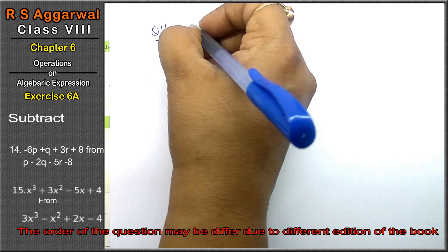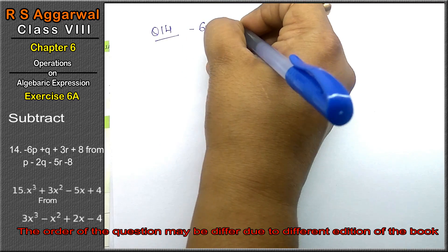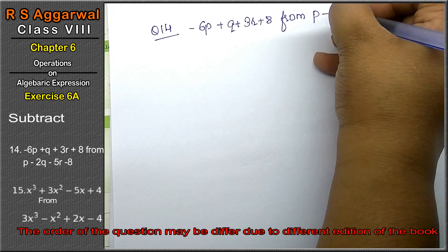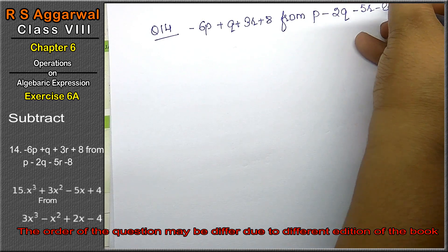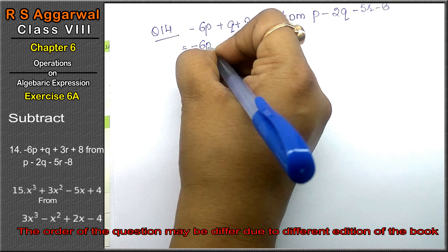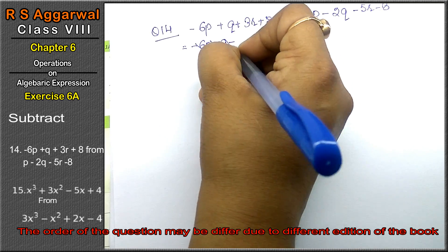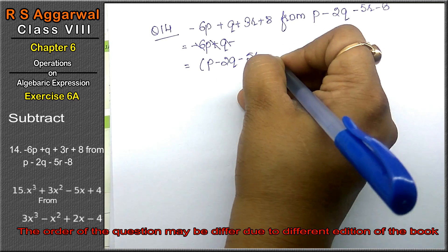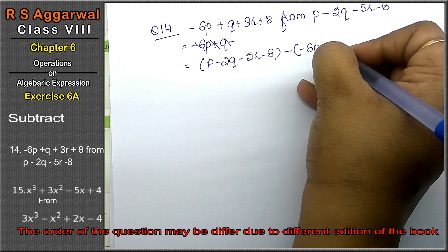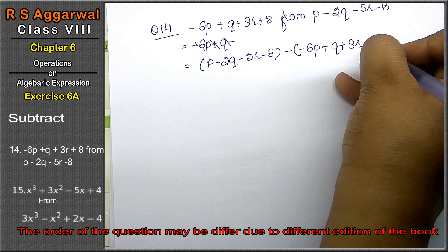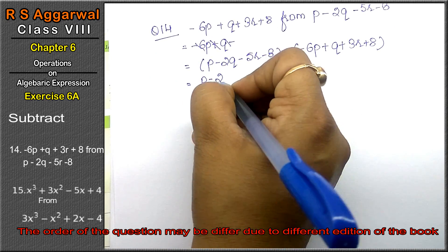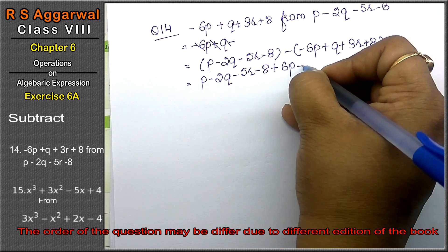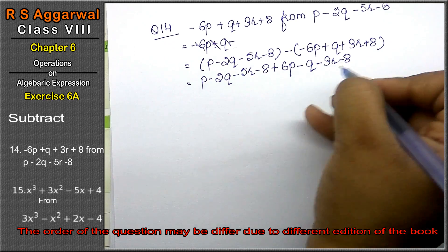Let's do question 14 of Exercise 6A. Question 14 is: subtract (-6p + q + 3r + 8) from (p - 2q - 5r - 8). We write 'from' term first: p - 2q - 5r - 8, then subtract (-6p + q + 3r + 8). Brackets open, sign changes: minus minus = plus 6p, minus q, minus 3r, minus 8.